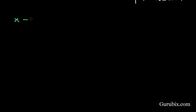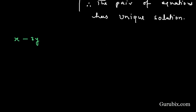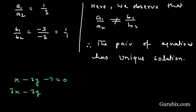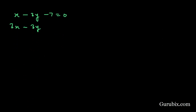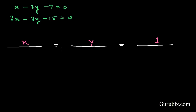The standard form is: x minus 3y minus 7 equals 0, and 3x minus 3y minus 15 equals 0. We write x, y, and 1 with signs of equality.